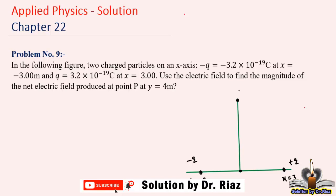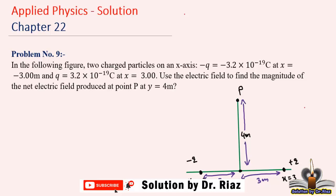The distance of point P, where we have to find the electric field, from the origin is 4 meters. So the distance between point P and the origin is 4 meters, the distance between the origin and the positive charge is 3 meters, and similarly the distance of the negative charge from the origin is 3 meters. We have to find what the electric field at point P is due to both of these charges.